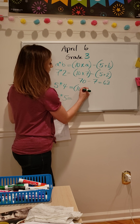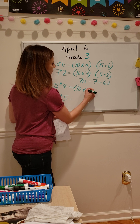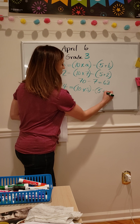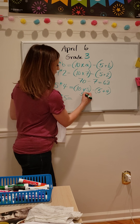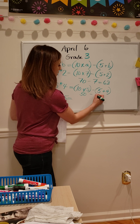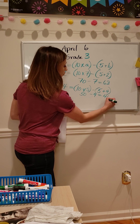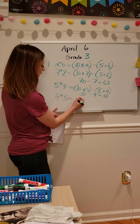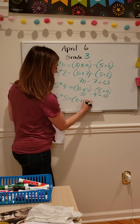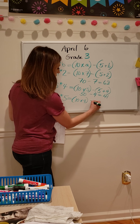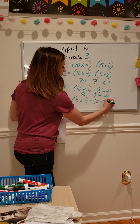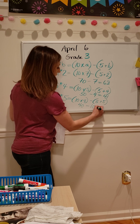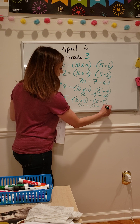For 5★4, I'm going to do 10 times 5 minus 5 plus 4. So I have 50 minus 9, which would be 41. And then for 4★5, I have 10 times 4 minus 5 plus 5. 40 minus 10 is 30.